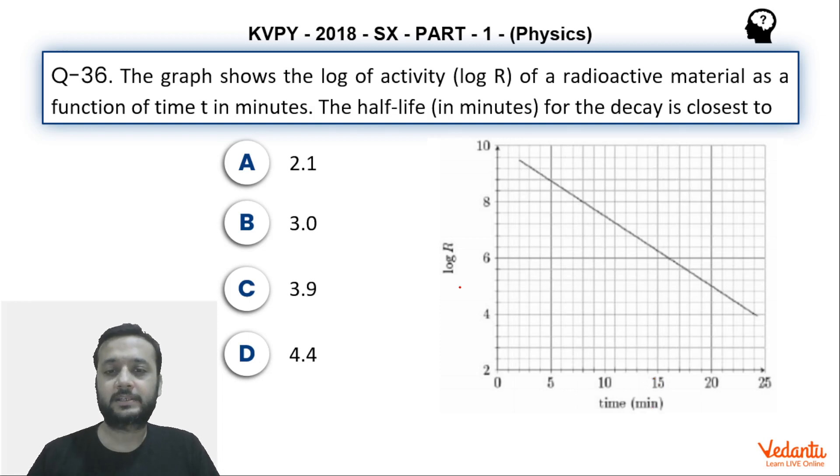Okay, so here log basically is in the base E which is not mentioned but whenever nothing is mentioned in physics we take base E. So we have to find the half-life. Now if you see the graph carefully, so this is a straight line graph.